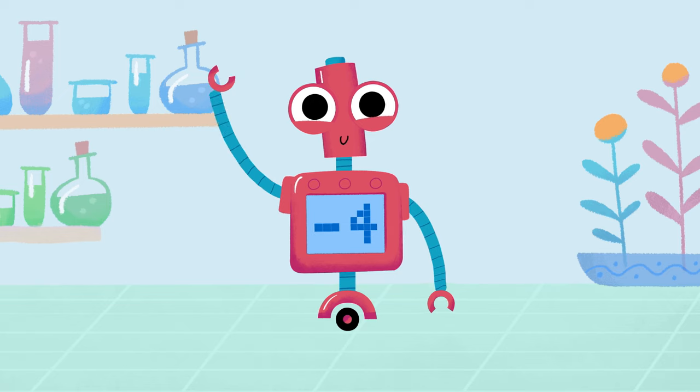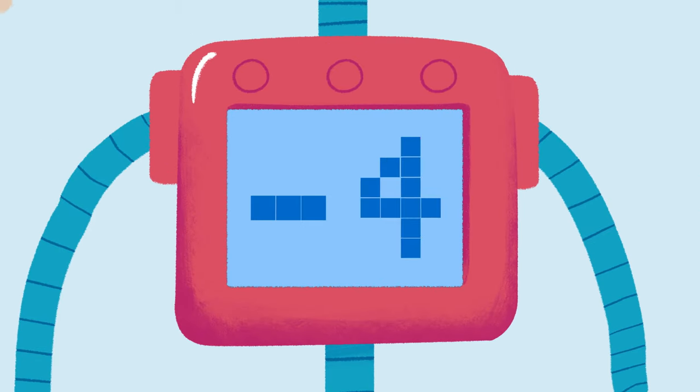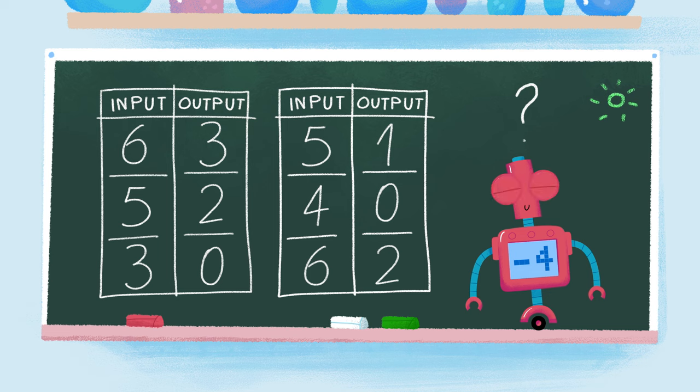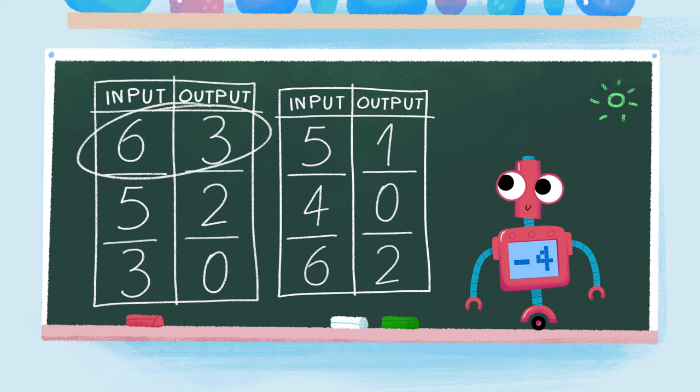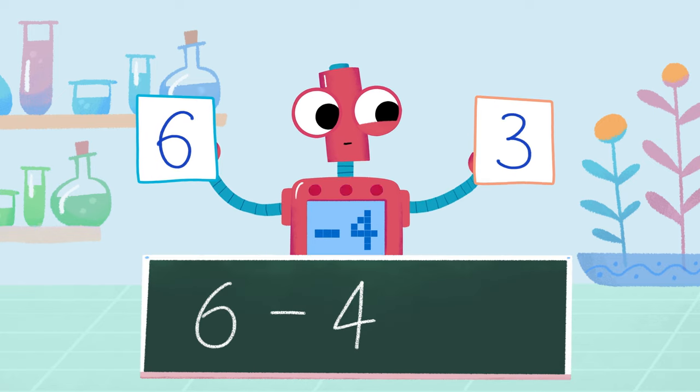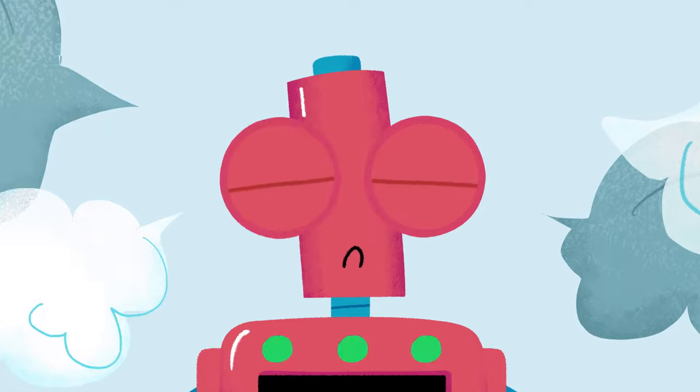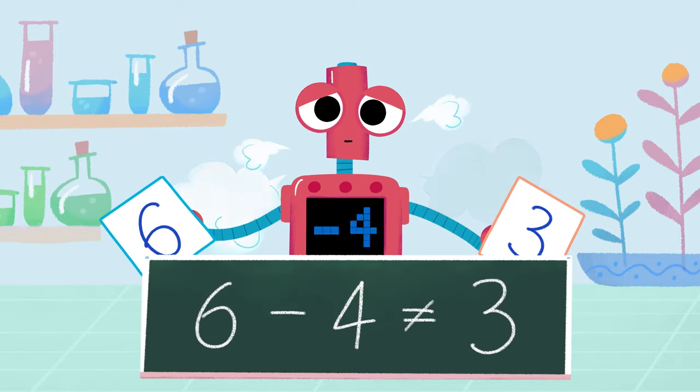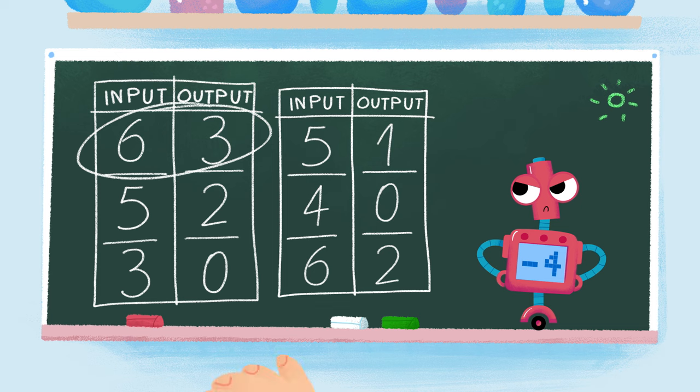The second robot has a rule, subtract four. Let's find out which table this rule will work for. The first input is six and the output is three. Is six minus four equal to three? No. It means that the robot's rule doesn't work here.